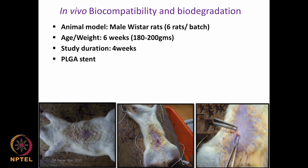We were looking at in vivo biocompatibility and biodegradation of a polymer called poly lactic glycolic acid (PLGA), which is supposed to be an alternate for use in ureteral stents — currently polyurethane is used. We want to look at this PLGA in an animal model of male Wistar rats, with about 6 rats per batch for the control and test groups, aged about 6 weeks and weighing 180–200 grams. These polymers are placed intraperitoneally, then sewn back, and after 30 days they are removed.